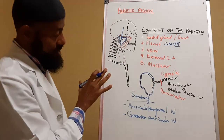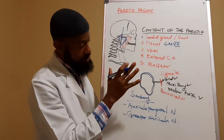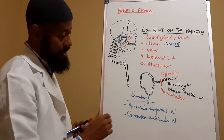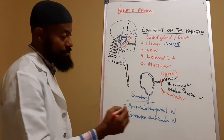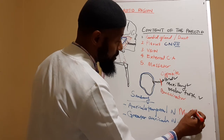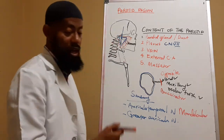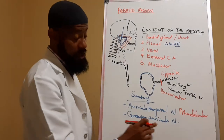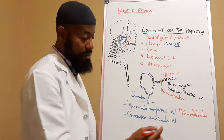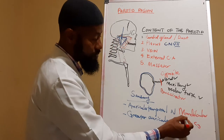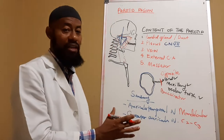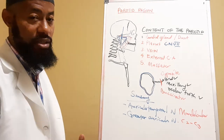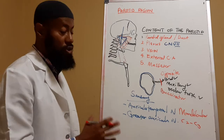The sensory innervation of the parotid sheath is provided by the auriculotemporal nerve and the greater auricular nerve. The auriculotemporal nerve is a branch of the mandibular nerve, which is one of the divisions of the trigeminal nerve. The greater auricular nerve is a branch of the cervical plexus, basically C2 and C3. Together they convey sensory modality — such as pain and irritation — from the gland to the central nervous system.